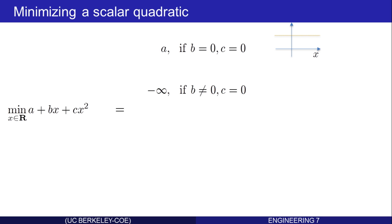The minimum is negative infinity if b isn't zero and c is zero. That's because the graph is a straight line with a non-zero slope. Therefore, the minimum is negative infinity by choosing x, in this case, large negative or large positive.